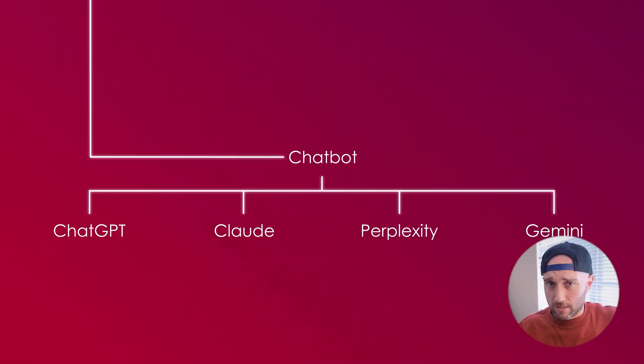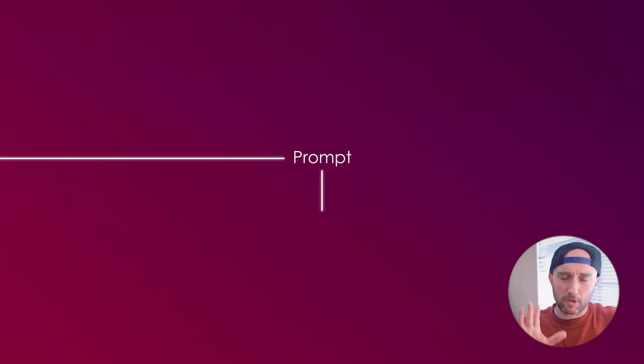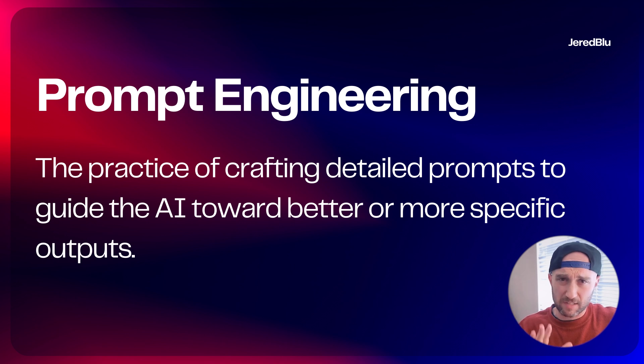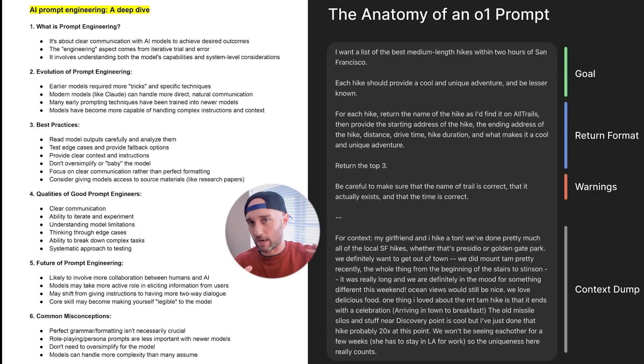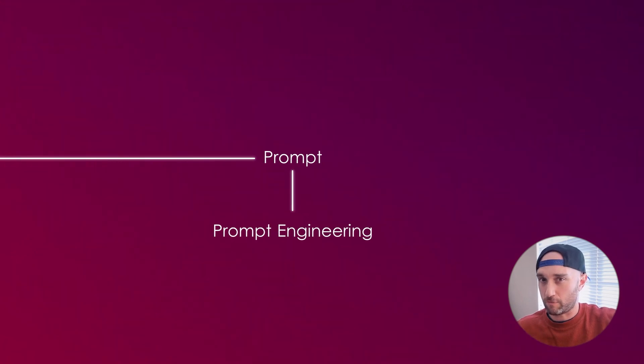The way we talk to these chatbots is with prompts. You might call it a message, a question, or a query, but essentially when you're talking to AI, you are prompting it. You put in an input and its response is an output. In the last few years, there's been a popular concept called prompt engineering. It's not as intense as it sounds — basically, it's a practice where you build complex prompts to achieve better outputs. As AI has gotten better, it becomes less relevant, but I still recommend learning the basics so you understand the limitations and can get better outputs from AI.